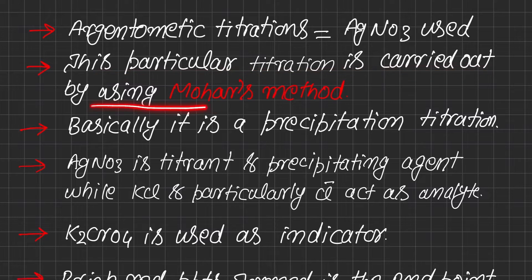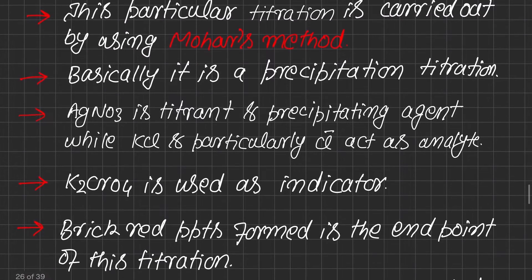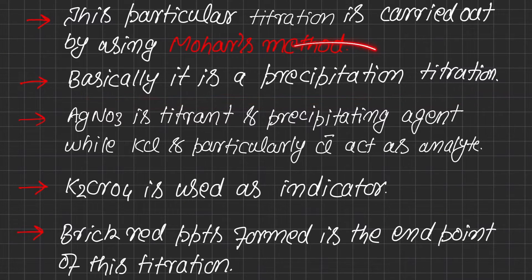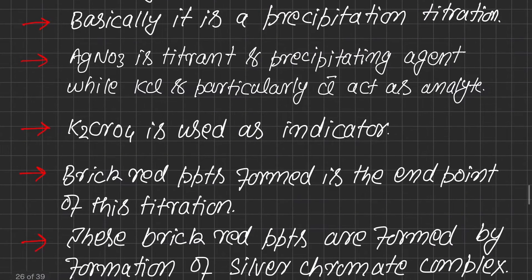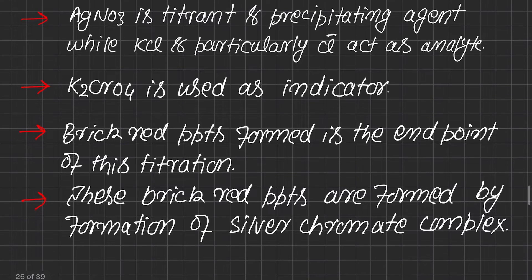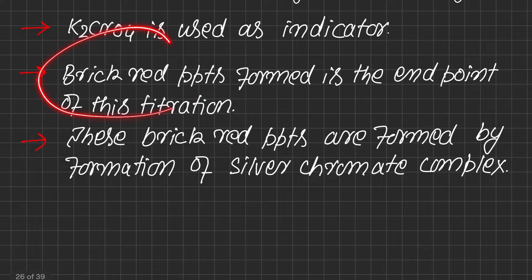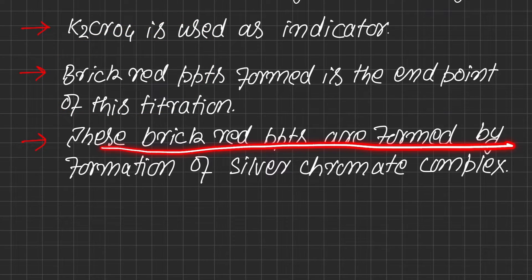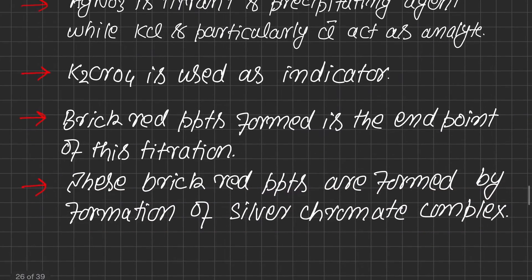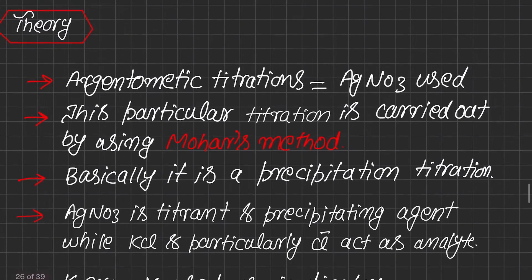We will use Mohr's method for estimation. This titration is a precipitation titration in which precipitates are formed. Silver nitrate is used not only as titrant but also as a precipitating agent — it precipitates chloride ions. We are using K₂CrO₄ as an indicator. The endpoint of this titration is brick red precipitates, which form by the formation of a silver chromate complex that is brick red in color.